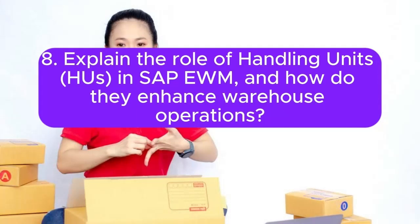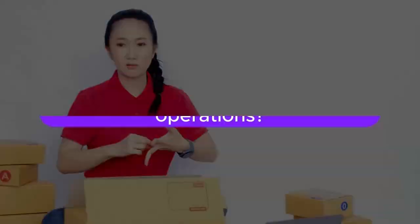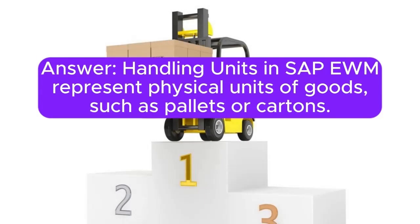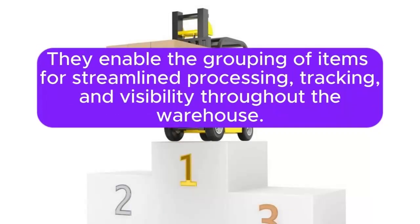Question 8: Explain the role of handling units (HUs) in SAP EWM and how they enhance warehouse operations. Handling units in SAP EWM represent physical units of goods, such as pallets or cartons. They enable the grouping of items for streamlined processing, tracking, and visibility throughout the warehouse.